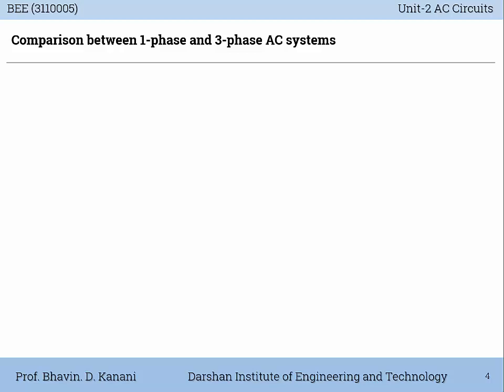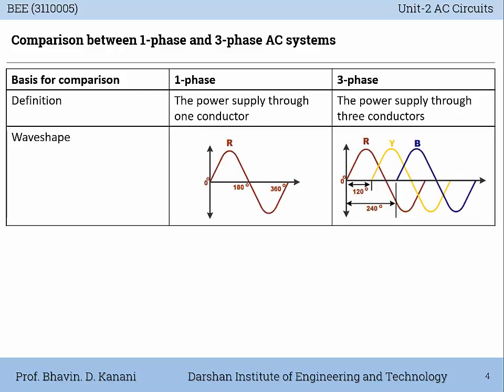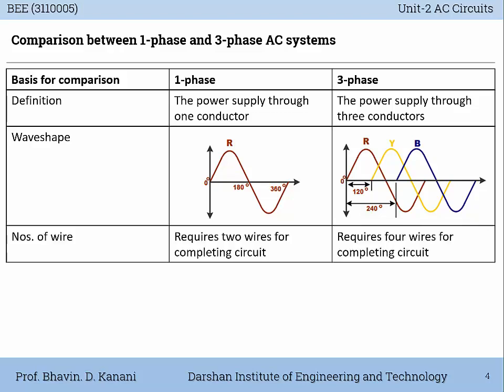Single-phase system supplies through one conductor, whereas in a three-phase system power is supplied through three conductors. The wave shape of single-phase has only one wave, whereas in three-phase there are three individual waves for three different phases: R, Y, B. Single-phase supply requires two wires for completing the circuit, whereas three-phase requires four wires.